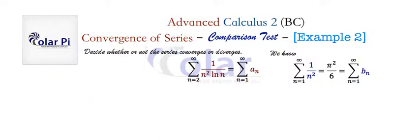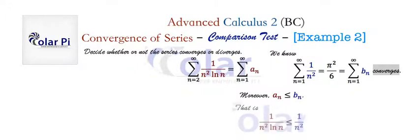This converges, and we even know what number it converges to. So now that means that because we now know that a sub n is less or equal to b sub n, that is saying that this is true.